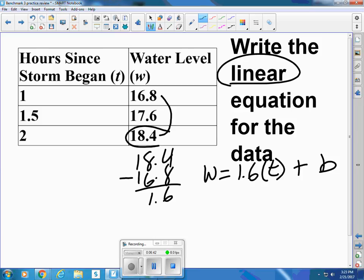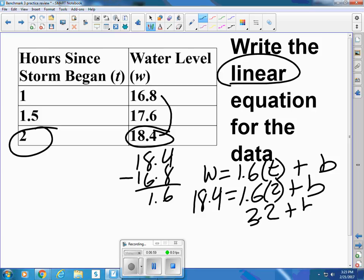Now we can plug in this value, and then we can go with two hours. We can plug in even one, but let's use this one. So 18.4 equals 1.6 times 2, plus b. That would be 3.2 plus b.